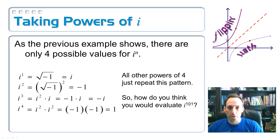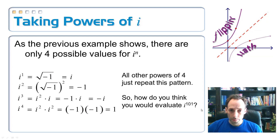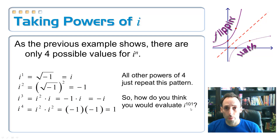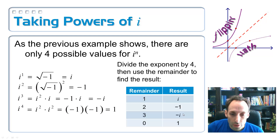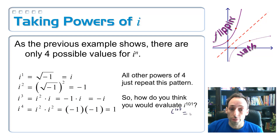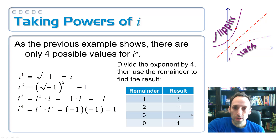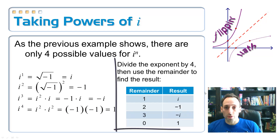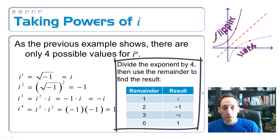How should we evaluate something really large, like i to the 101st power? The answer involves dividing 101 by 4 and seeing what the remainder is. It's going to have a remainder of 1, because i to the 100 is the same as i to the 4th raised to the 25th, which equals 1. We still have one more power of i, so that's just i. To simplify these powers of i, divide the exponent by 4 and use the remainder as your new power of i.